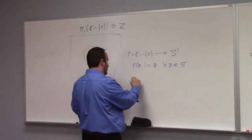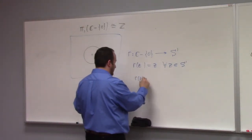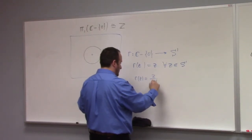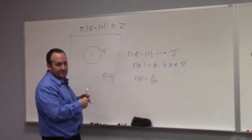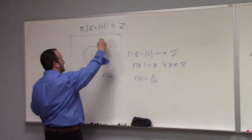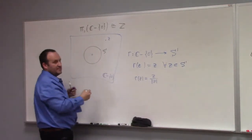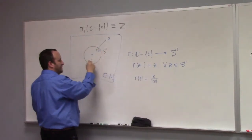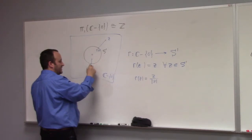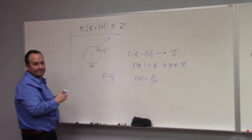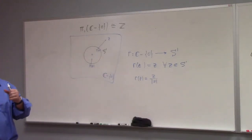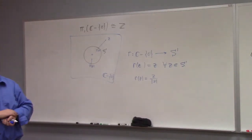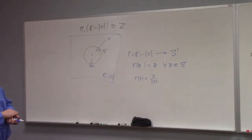This map is pretty simple: r(z) = z / |z|. All that does is take a point z out in the punctured plane and map it back onto the unit circle — that's r(z). You can see why it's called a retraction: you're taking the space and retracting it to that subset.